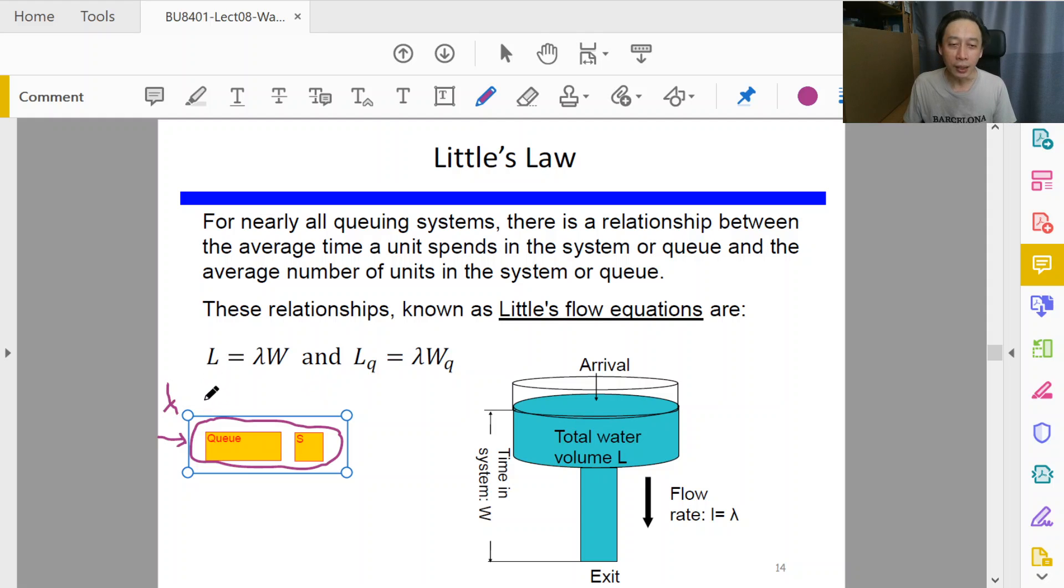Suppose it takes W seconds for the entities to come out from the Little's Law boundary. This boundary is just an arbitrary enclosure, and then you have traffic flow. The average rate of flow is lambda and it takes W seconds, or minutes or hours—doesn't matter—for a particular identified entity to go in and come out. My physical arrow here indicates the length of time. Then we ask: what is the quantity, the average quantity, of entities trapped in this Little's Law boundary? That's our L.